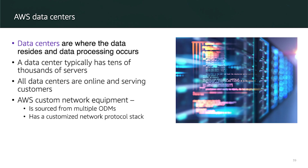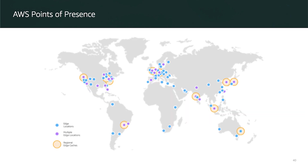AWS data centers are where the data resides and data processing happens. A data center typically has tens of thousands of servers, all online and serving customers, and AWS custom network equipment is stored in those data centers. To deliver content to end users with low latency, Amazon CloudFront uses a global network that includes over 200 points of presence comprised of edge locations and regional edge caches, located in North America, Europe, Asia, Australia, South America, Middle East, Africa, and China. These edge locations support AWS services like Amazon Route 53 and Amazon CloudFront. Regional edge caches are used by default with Amazon CloudFront for content that is not accessed frequently enough to remain in an edge cache, absorbing that content as an alternative to fetching it from the origin server.